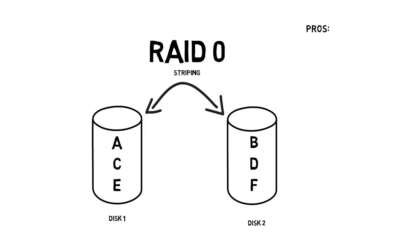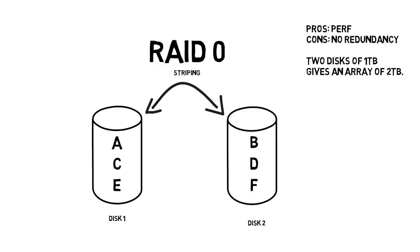So if you were writing A, B, C, D — you'd write A on disc one, then B on disc two, C on disc one, D on disc two, and so on. That means you've got two discs which you can read and write to, so you effectively double the performance. While one bit is being written on drive one, drive two can get on with its work. And when you read back a very big file, you can read it interleaved between the two discs and get the data back a lot quicker.